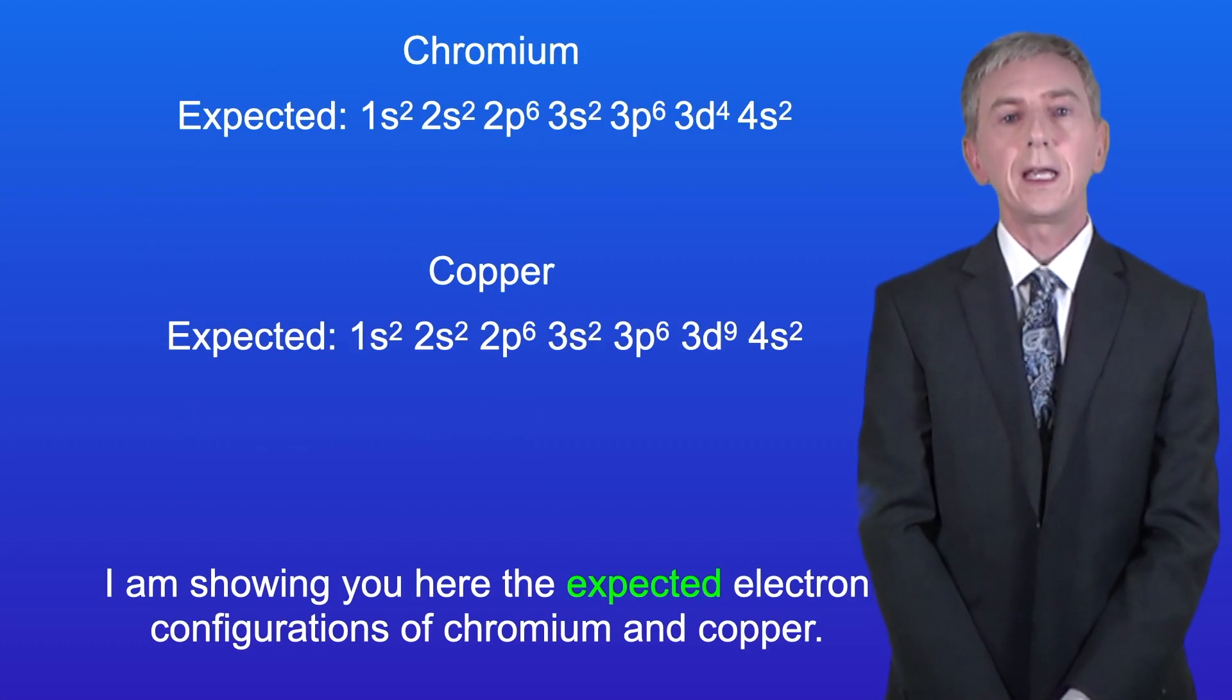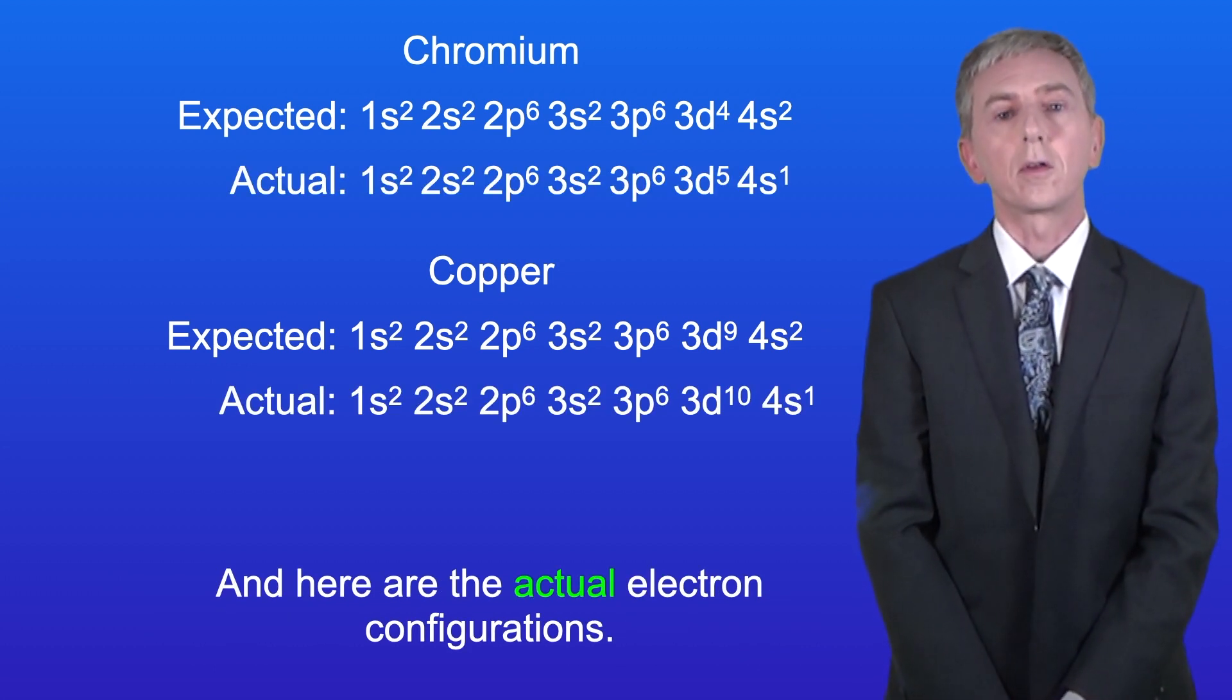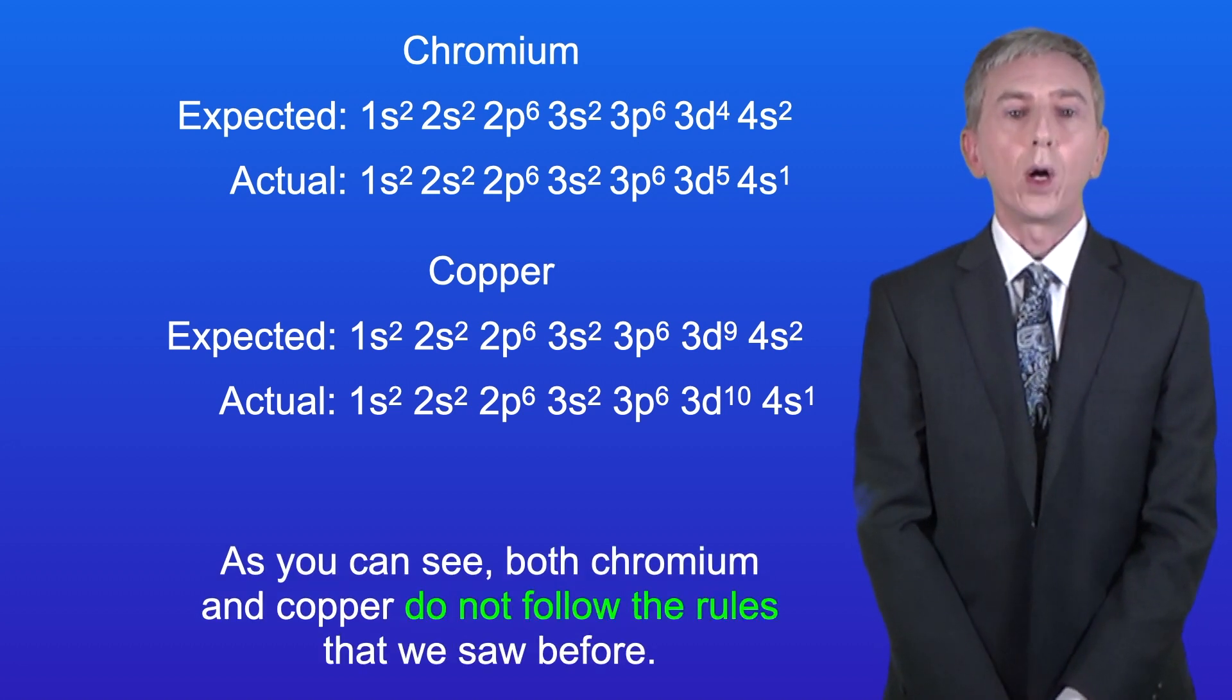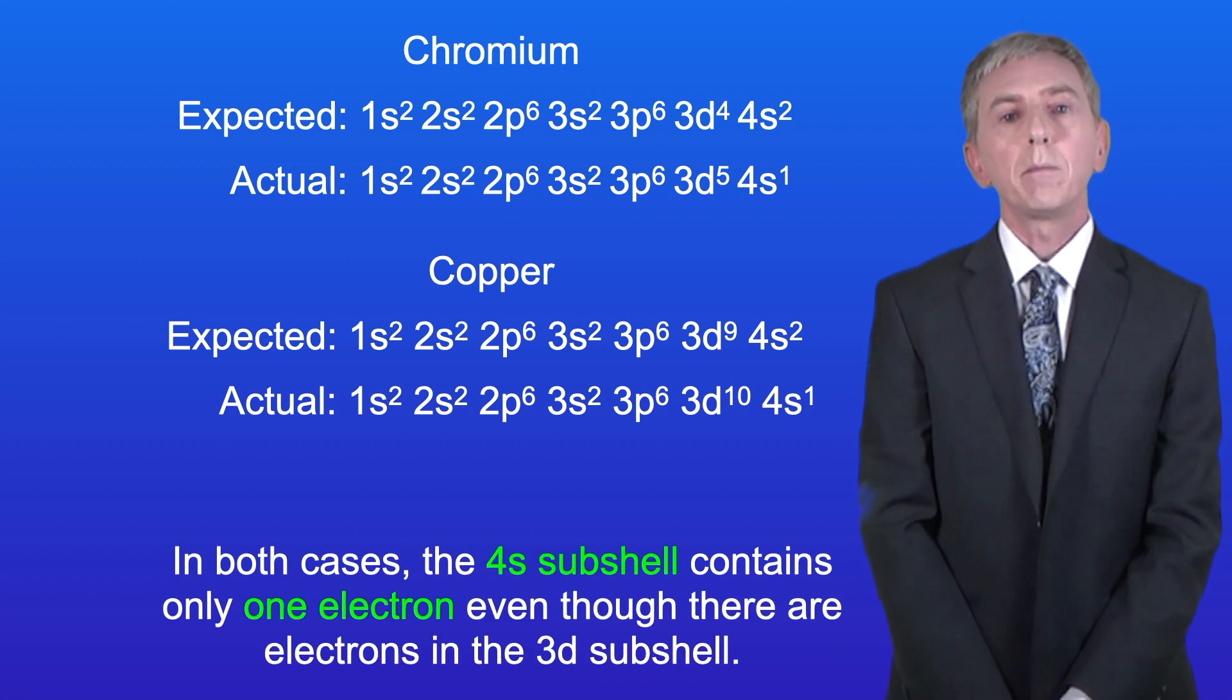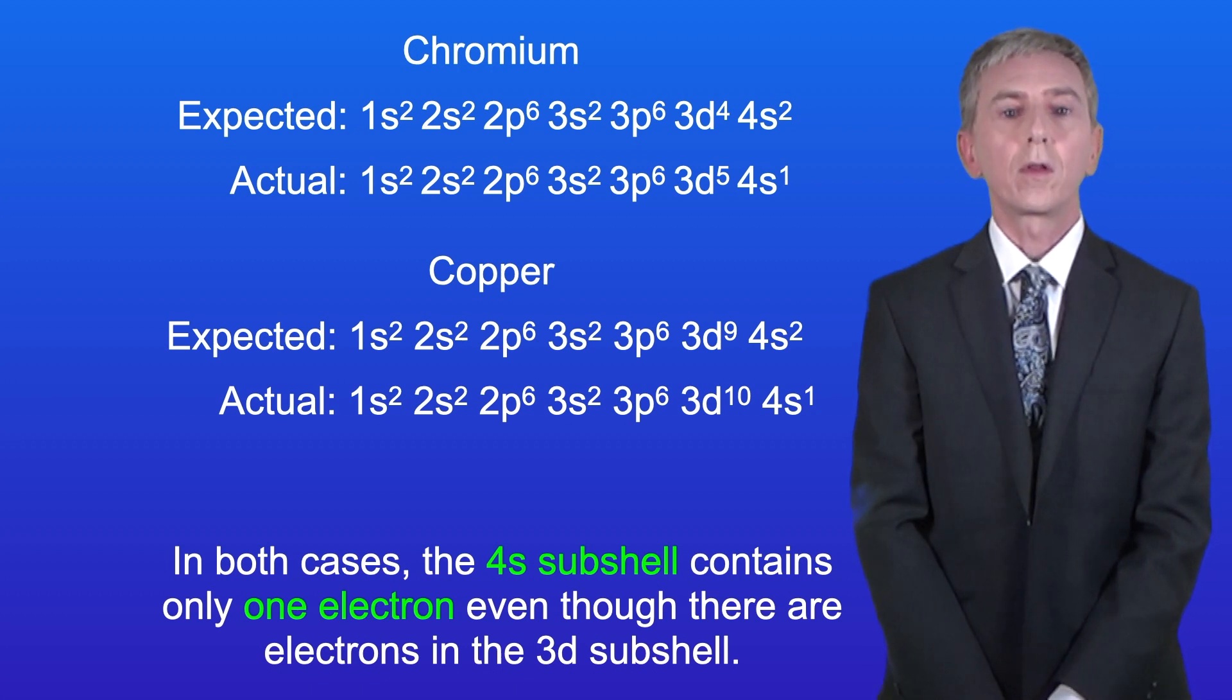Okay, I'm showing you here the expected electron configurations of chromium and copper. And here are the actual electron configurations. So as you can see, both chromium and copper do not follow the rules that we saw before. In both cases, the 4s-subshell contains only one electron, even though there are electrons in the 3d-subshell.